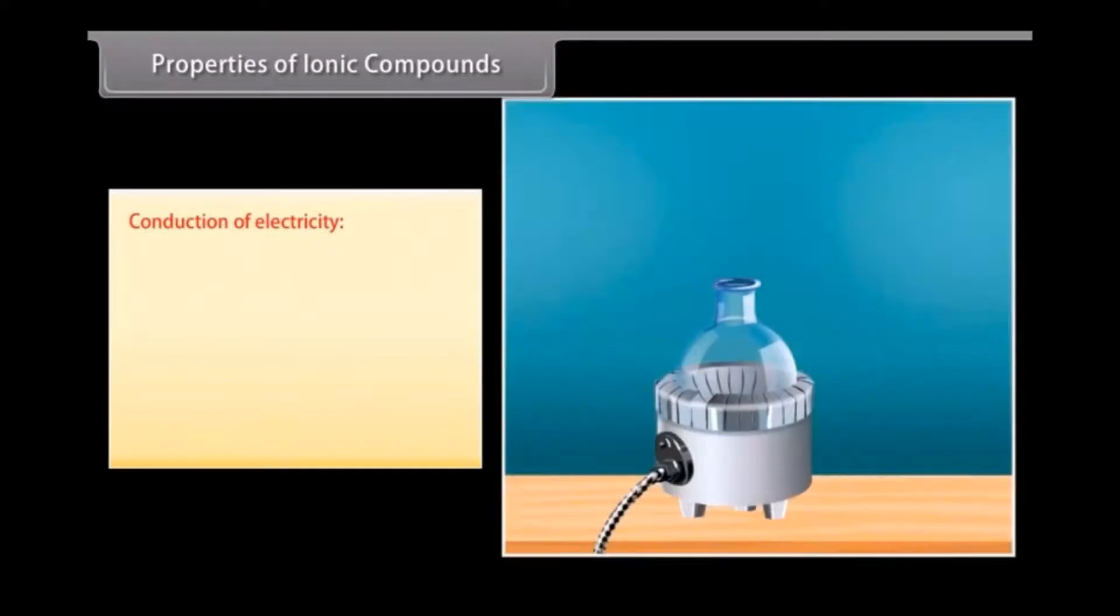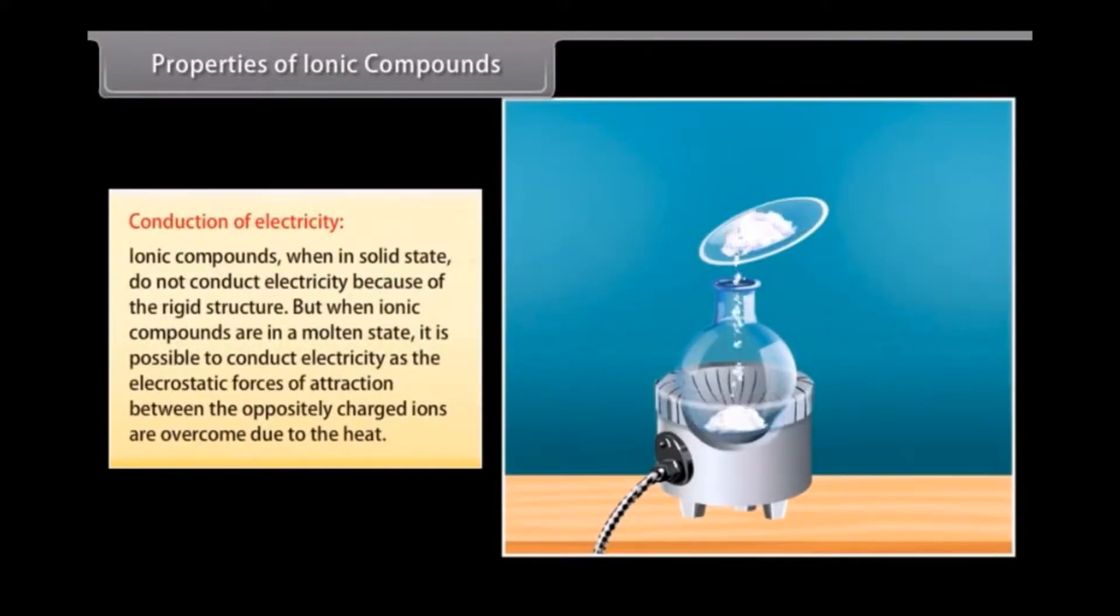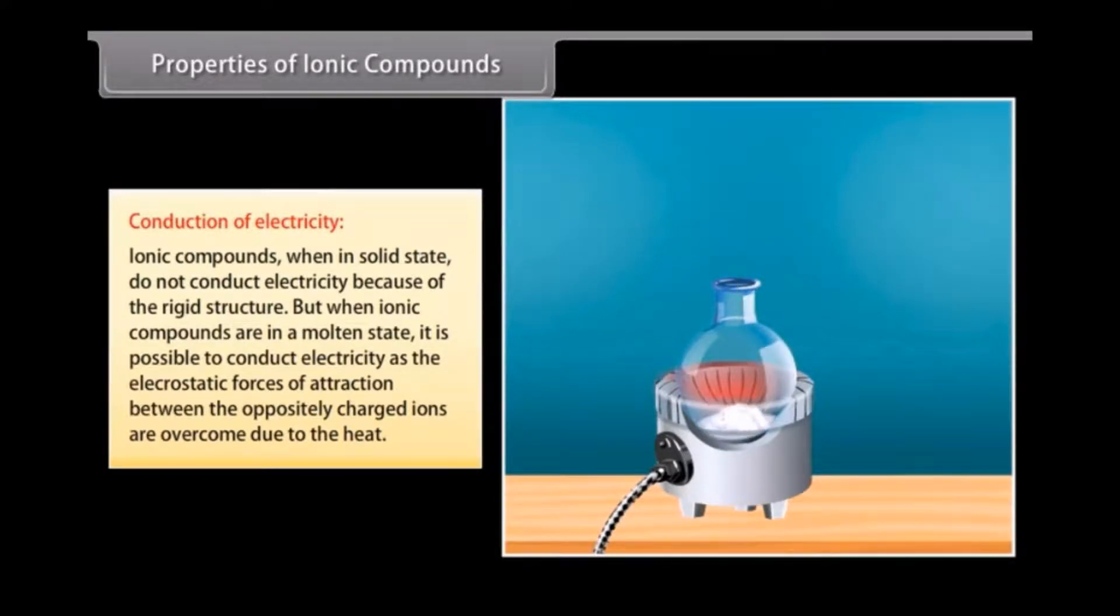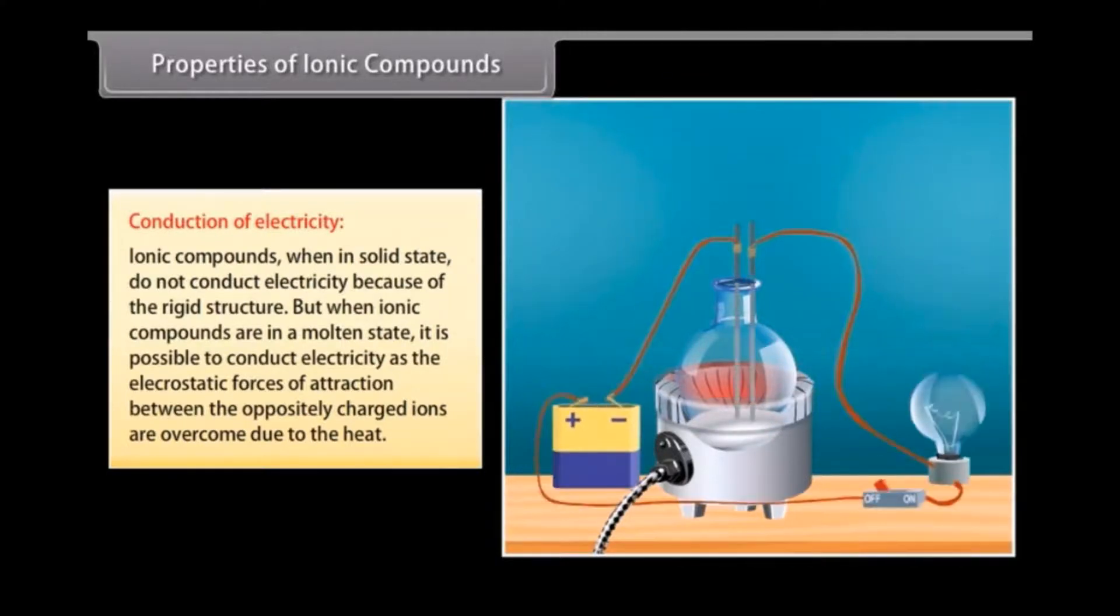Conduction of Electricity: Ionic compounds, when in solid state, do not conduct electricity as the movement of ions is not possible because of the rigid structure. But when ionic compounds are in a molten state, it is possible to conduct electricity as the electrostatic forces of attraction between the oppositely charged ions are overcome due to the heat. This leads to ions to move freely and conduct electricity.